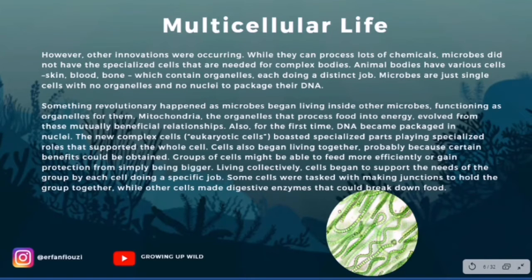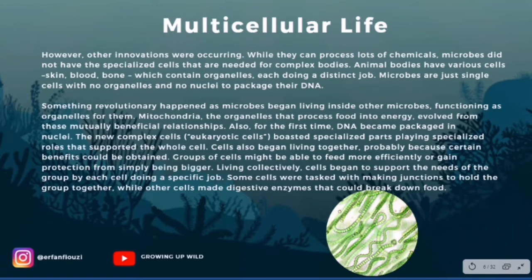Other innovations were also occurring. While microbes can process lots of chemicals, they did not have the specialized cells needed for complex bodies. Animal bodies have various cells — such as skin cells, blood, and bone — which contain organelles, each doing a distinct job. Microbes are just single cells with no organelles and no nuclei to package their DNA.